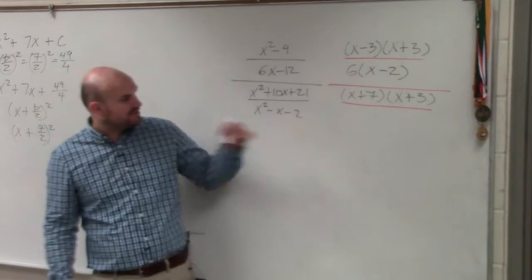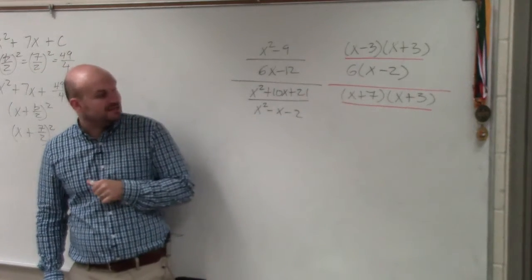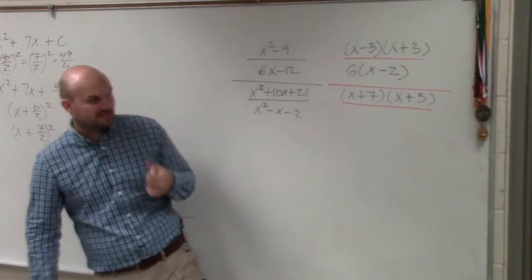And then over here, I need to figure out what two numbers multiply to give me negative 2, add to give me negative 1. So that would be x minus 2 times x plus 1.